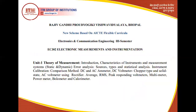Now, as per the RGPV syllabus, we will see the learning outcomes. The first unit is the Theory of Measurement. In this unit, we will know the characteristics of instruments — dynamic and static nature — techniques of measurement, how to measure units, how to measure and rectify errors, and how to calibrate instruments. This unit also includes DC voltmeters, rectifiers, multimeters, ballistic galvanometers, calorimeters, and power meters.